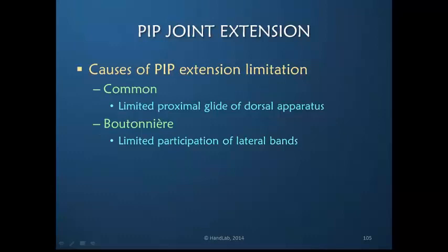In addition to the evaluations previously discussed about determining whether it's joint, extrinsic tightness, or intrinsic tightness, it's also helpful to think about the PIP joint specifically and what is driving extension. The most common limitation actively of PIP joint extension is the inability of full proximal glide of the dorsal apparatus - in other words, adherence of the dorsal apparatus so that it cannot glide proximally. The majority of what we do to increase PIP joint motion actively is to assure better proximal glide of the dorsal apparatus.